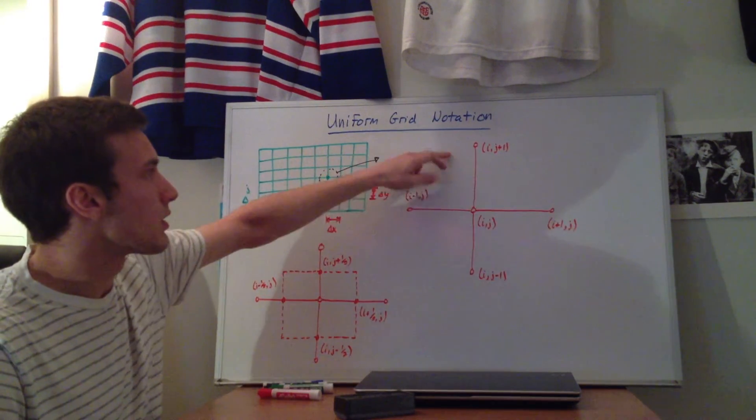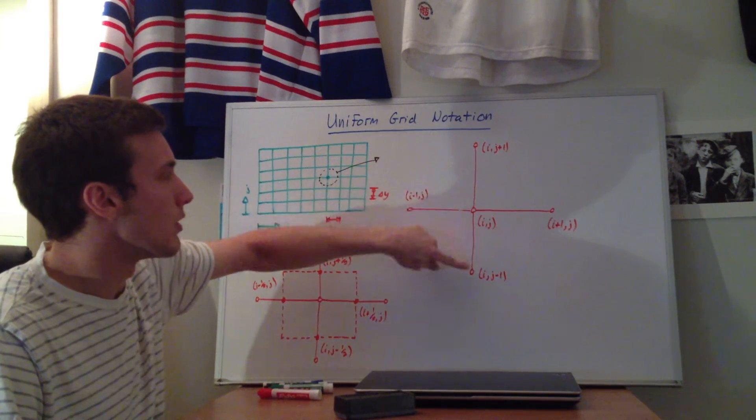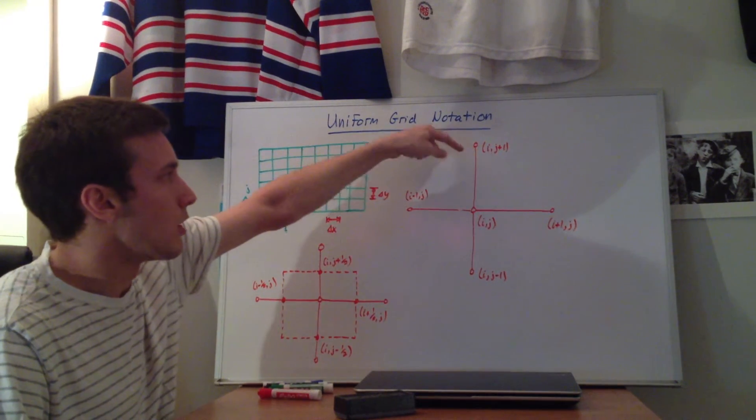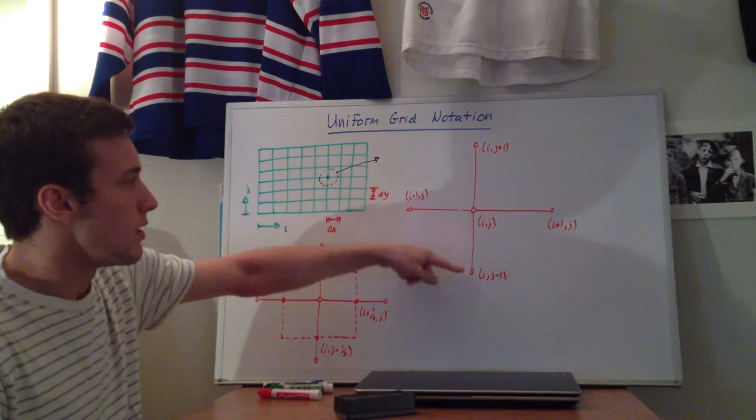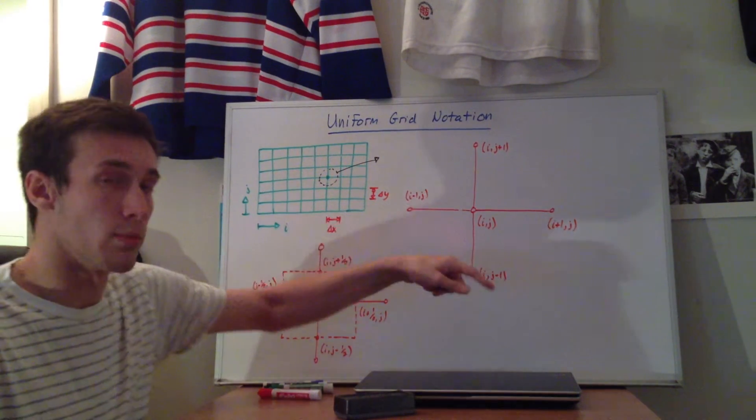So now if we want to move in the y direction, the point will be i, so we're not moving anywhere in the x direction. And then we'll have j plus 1 because we moved up one point. And then here we'll have i because we haven't moved in the x direction, and we moved down one point, so we'll have j minus 1.